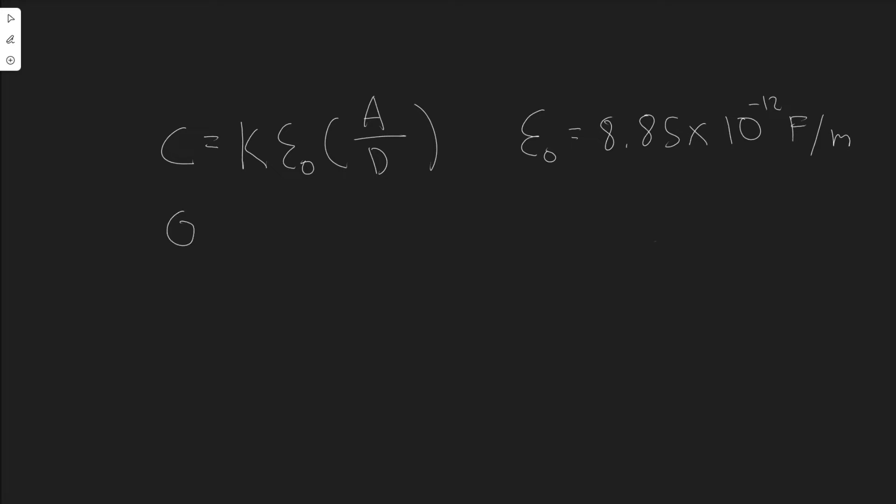And so the way I start these problems is you always want to write down the given. So what values are we told? So they tell us in the problem that we're given a capacitor of 0.4 microfarads. So let's go ahead and write that down, 0.4 microfarads. And then we're told that the air gap or the distance between them, d, in this equation is equal to 2.8 millimeters. So I'm going to write d equals 2.8 millimeters.